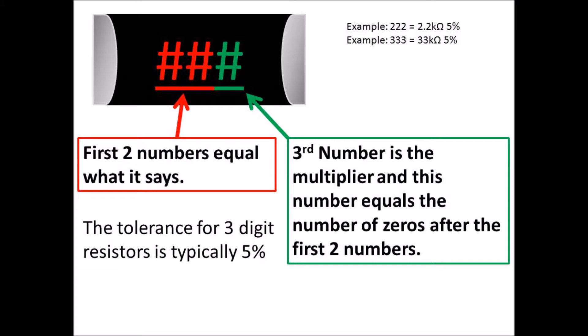And then the third digit is going to be a multiplier. So the example I give is 222. The first two numbers is 22, the third is two zeros, so it would be 2.2 kilohms. And then the second example is 333, so you would have 33 with three zeros at the end, which would be 33 kilohms.